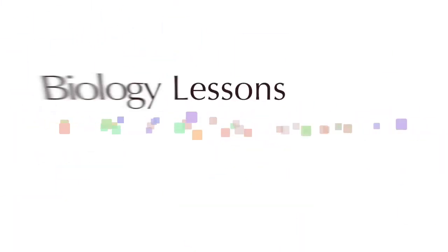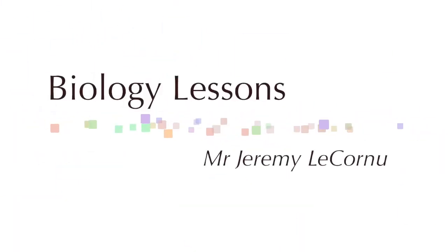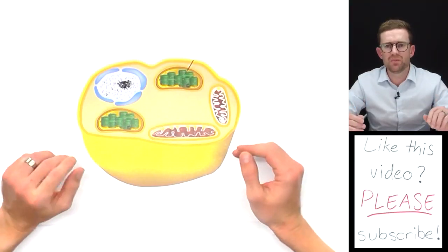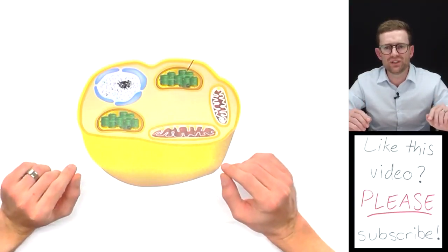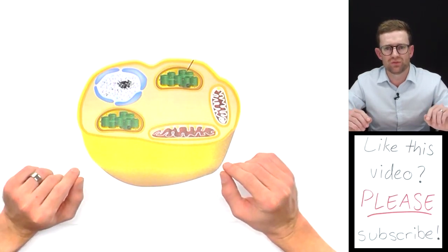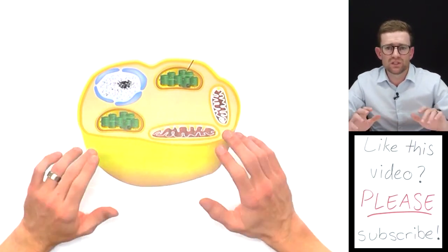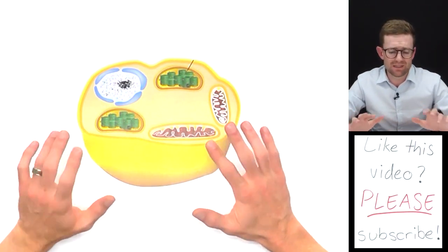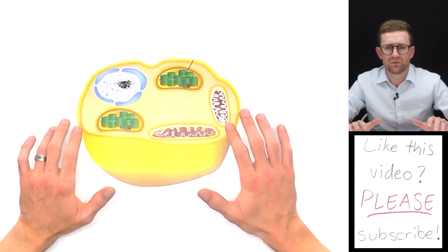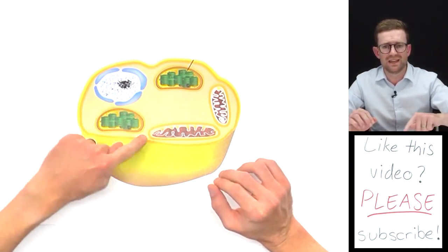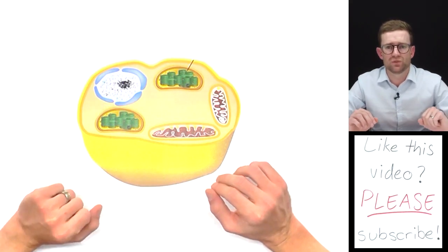Let's take a look. Here we have a cell. Remember that cells are individual units of life, which means they need to be able to move things in and move things out in order to carry out the processes they need to stay alive. Those processes can be either passive or active.